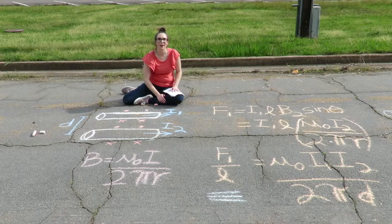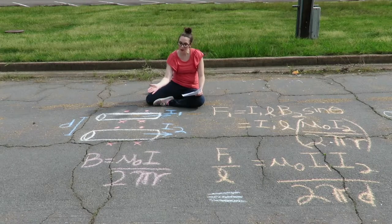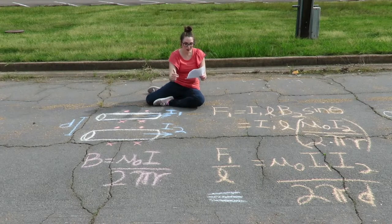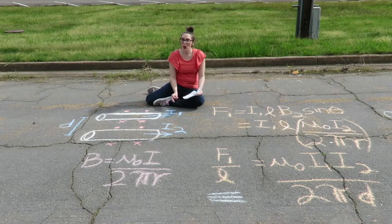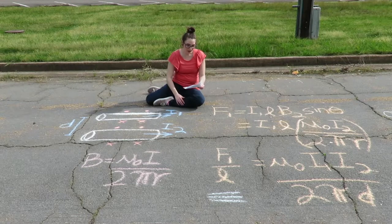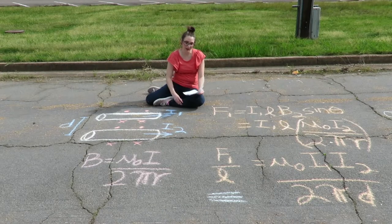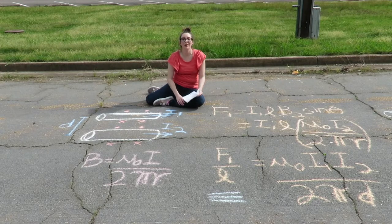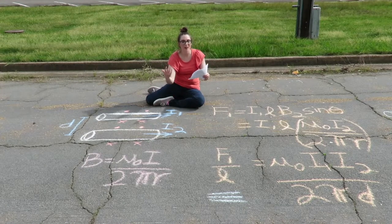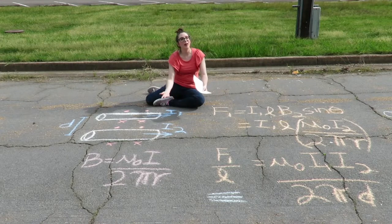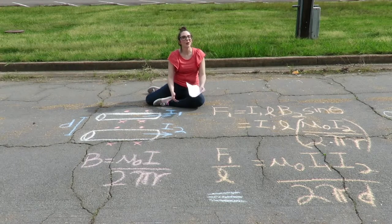We use the right-hand rule to determine direction. One important piece of information: the force between two parallel current-carrying wires is used to define the SI unit of the ampere. If two long parallel wires are separated by one meter, carry the same current, and the magnetic force per unit length on each wire is 2×10⁻⁷ N/m, then that current is defined to be one ampere.